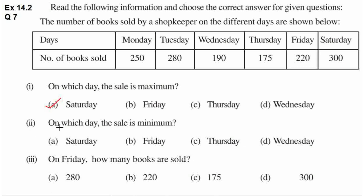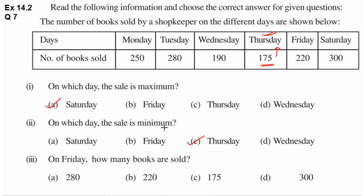Second question: on which day the sale is minimum? Kaun se din minimum number of books sell ki gahi hai? Is table mein 175 sab se chota number hai. 175 books sell ki gahi hai Thursday ko. Yahaan per options mein Thursday kaun per mentioned hai? C option hai Thursday, so C is the correct option. Thursday ko minimum number of books sell ki gahi hai.